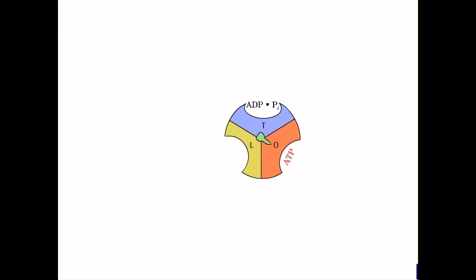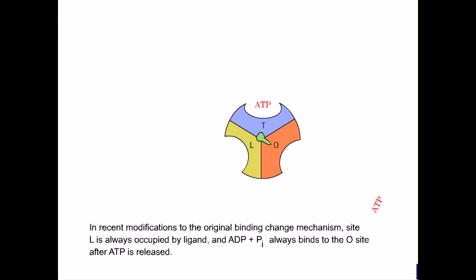As ATP is released from the new O site, another molecule of ATP is formed spontaneously at the new T site.